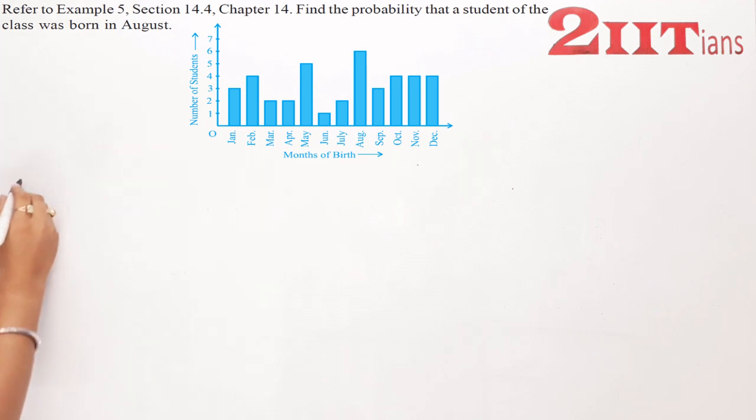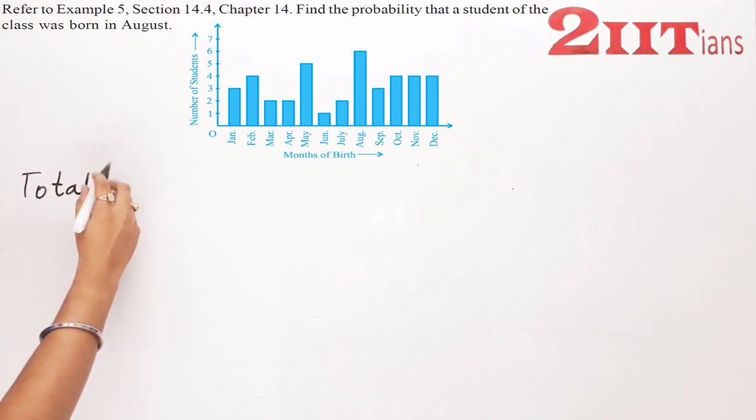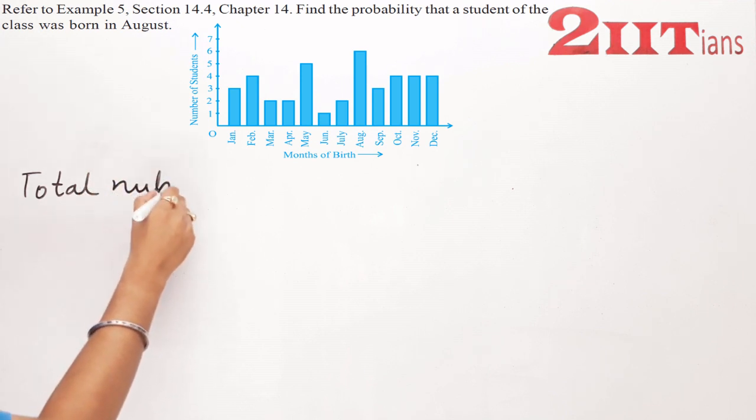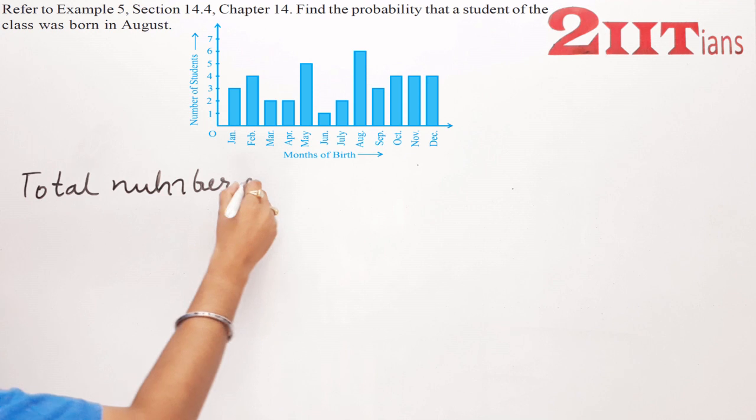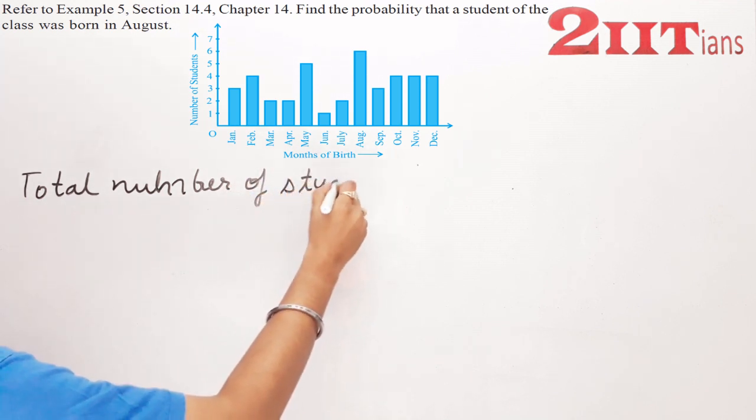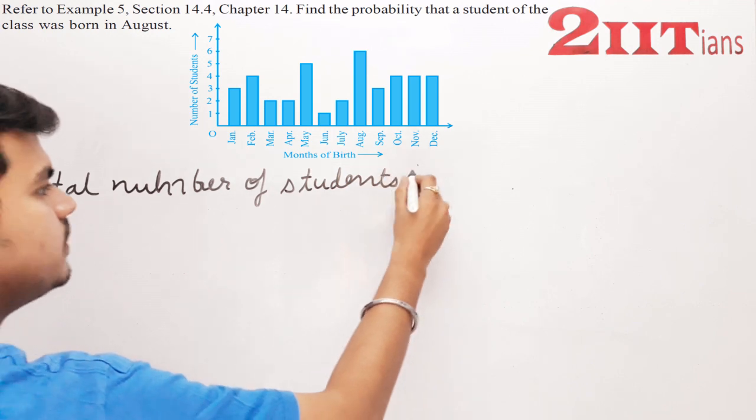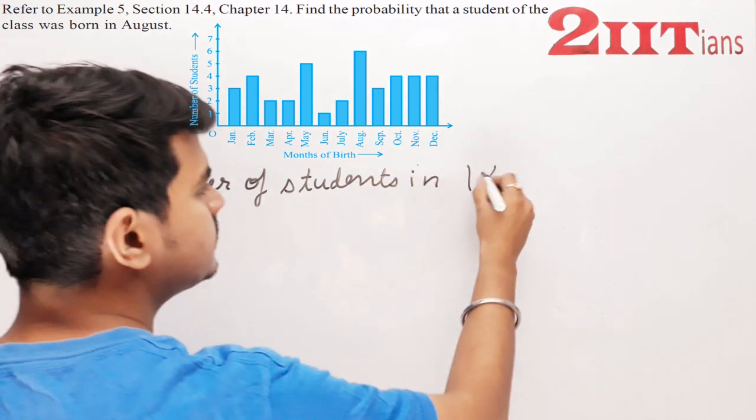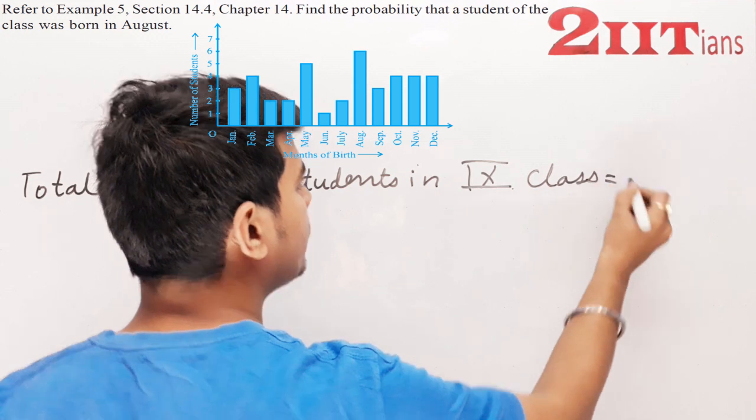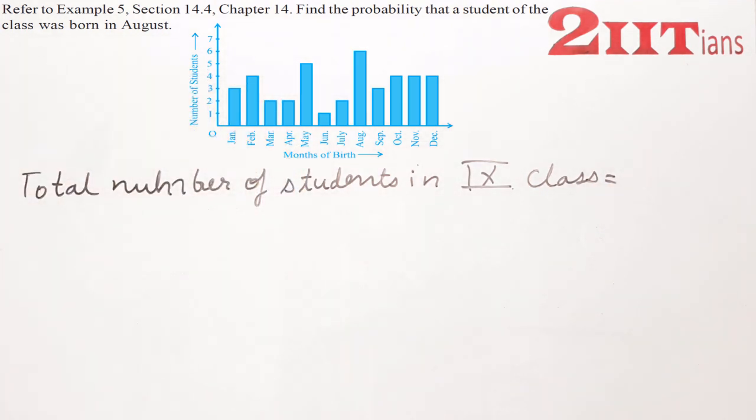Total number of students in ninth class. How many students are there? Forty. So n(S) = 40.